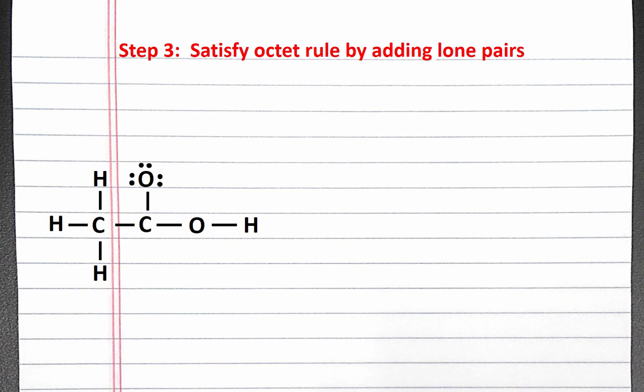Oxygen is our only other peripheral atom. It currently has one bond, so it wants six more electrons. We do still have two central atoms that want additional electrons, carbon and oxygen. Since oxygen is more electronegative, we'll satisfy it first with four lone pair electrons.